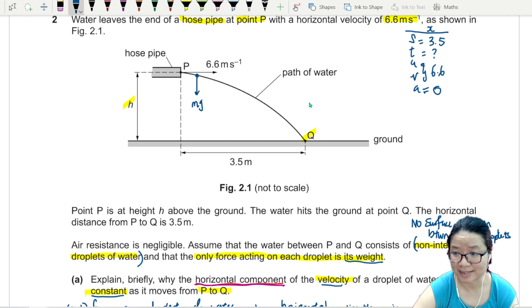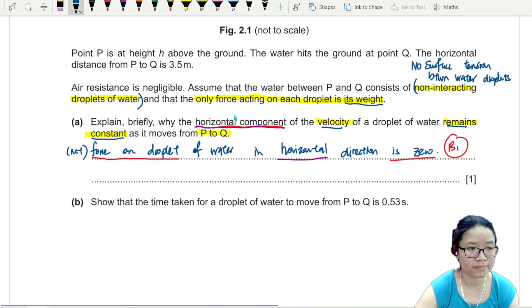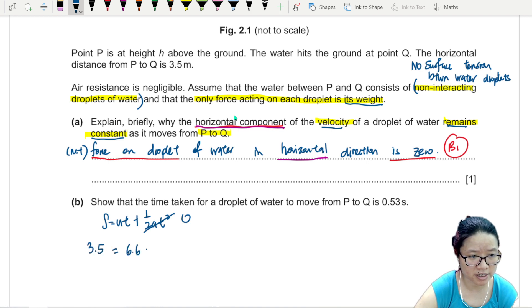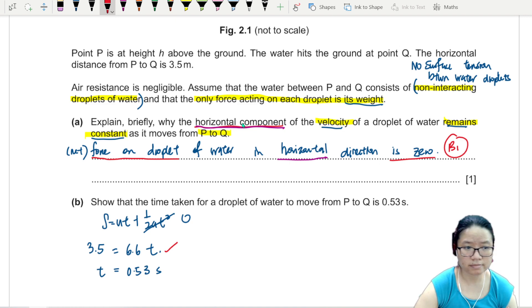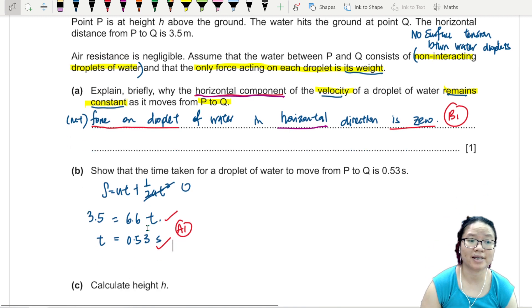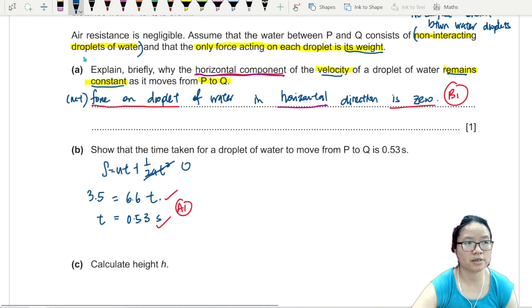Because of that, the acceleration is 0. So I can use S equals UT. You can write the whole equation UT plus half AT squared. This one becomes 0. So 3.5 equals 6.6 times T. So T would be 0.53 seconds. So the calculation, to get this mark, you must show the calculation, meaning I need to see at least something like this, leading to the final answer. Don't just write the middle line without the final line. They are both needed. So hence it is proven or shown.